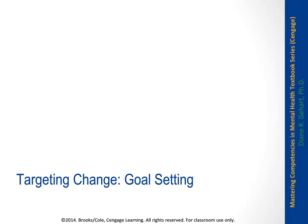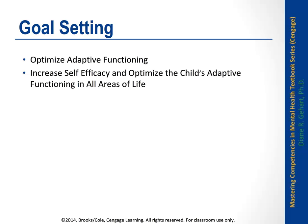As a manualized approach targeting a specific population, TF-CBT has clear structured goals. The basic goals are to optimize adaptive functioning and increase the child's self-efficacy across cognitive, emotional, relational, and behavioral areas. Trauma is quite treatable, and it is realistic to expect the child to return to normal functioning — that is the overarching goal of this approach.